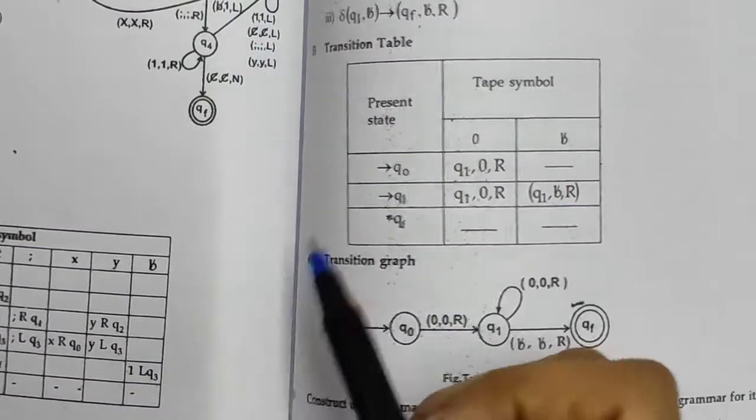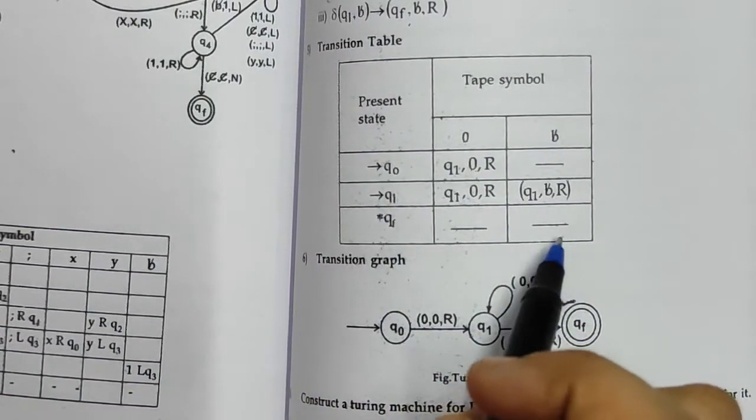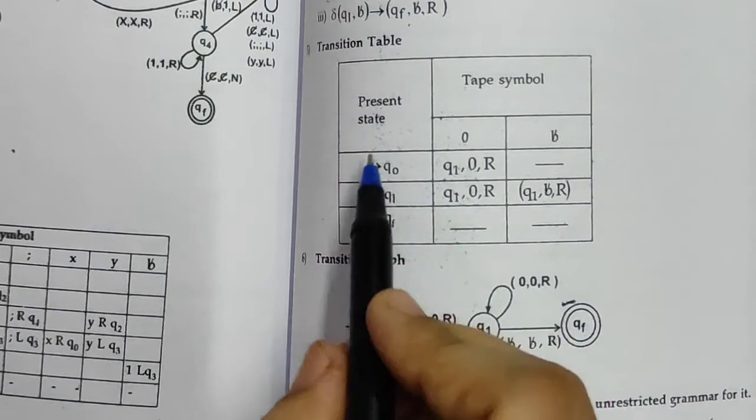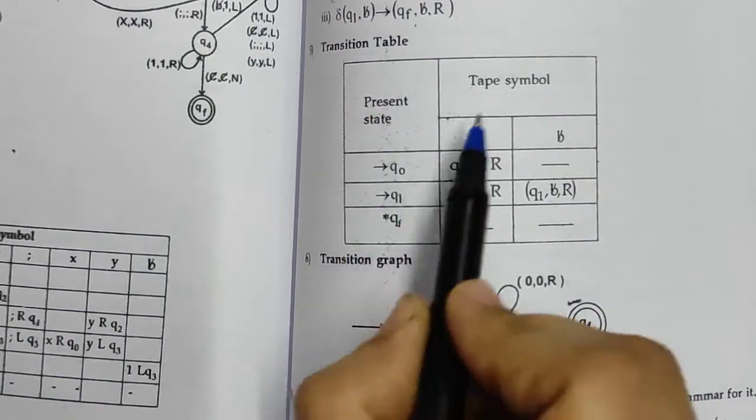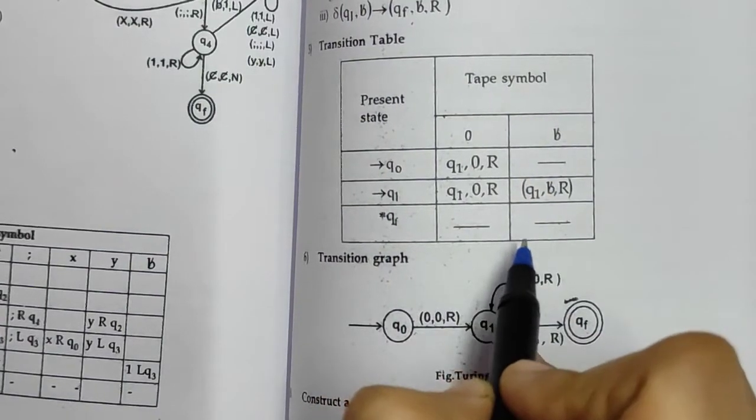This is the transition table. We can represent the same information with the help of a transition table: present state, these are the inputs, this is the tape symbol, and these are the transitions that are happening.